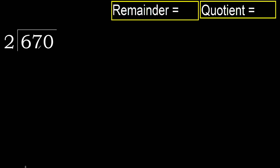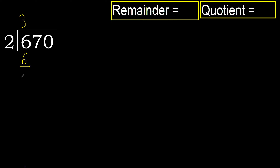670 divided by 2. 6 is not less — therefore with 6, 2 multiplied by which number is nearest but not greater? 2 multiplied by 4 is 8 — 8 is greater. 2 multiplied by 3 is 6. 6 is not greater. 6 minus 6 equals 0.